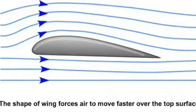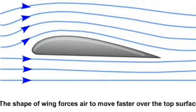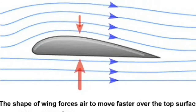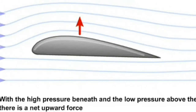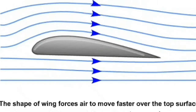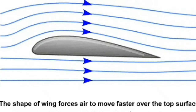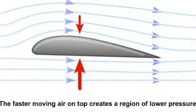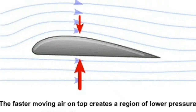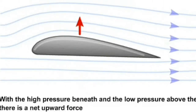This is based on the principle of Bernoulli's theorem, which states that when the pressure increases the velocity will decrease. The equation is P + ½ρV² = C, where P is the pressure, ρ is the air density, V is the velocity of air, and C is a constant. The equation shows that when the velocity of air increases, the pressure declines. So lower pressure is created on top of the aerofoil and higher pressure underneath.